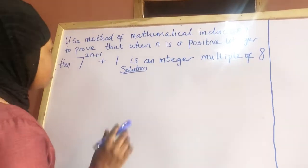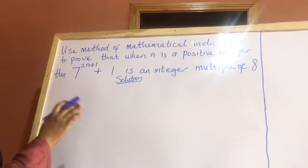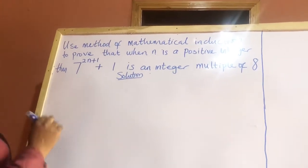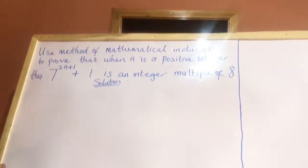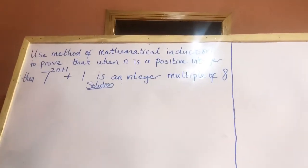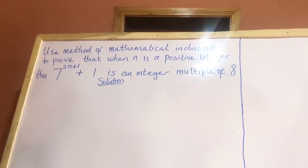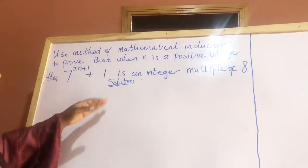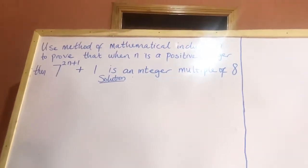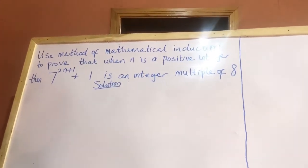Use the method of mathematical induction to prove that if n is a positive integer, then 7 raised to the power of 2n plus 1, plus 1, is an integer multiple of 8.